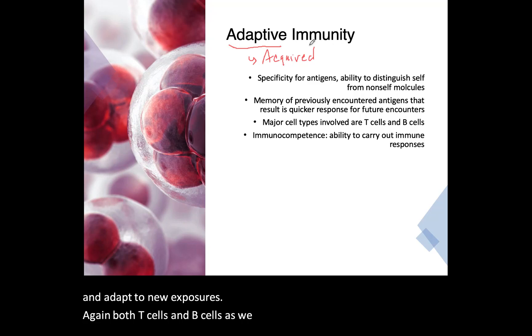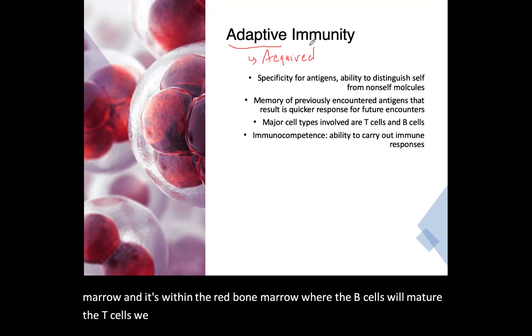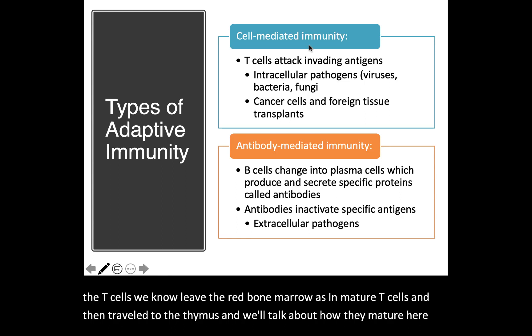Both T cells and B cells are produced within the red bone marrow. B cells will mature in the red bone marrow, while T cells leave the red bone marrow as immature T cells and travel to the thymus to mature — we'll talk about how that maturation happens coming up.